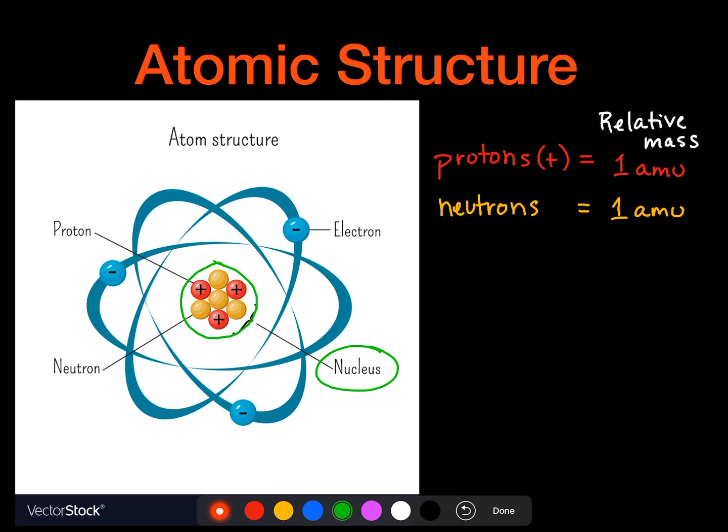And so both of these are found in that nucleus. And then outside the nucleus, we have our electrons. They have a negative charge. And really, we say they don't have any mass. That's not entirely true. But their relative mass is so small in comparison to the other two that we kind of ignore it for all intents and purposes. It's such a negligible amount.